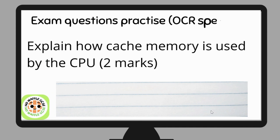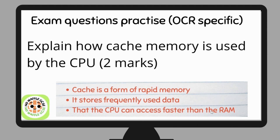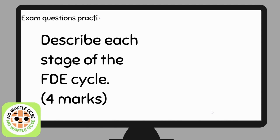Let's look at some exam questions. The first is: explain how cache memory is used by the CPU. Pause to answer. Cache is a form of rapid memory — it stores frequently used data that the CPU can access faster than the RAM. Let's look at another exam question: describe each stage of the FDE cycle.